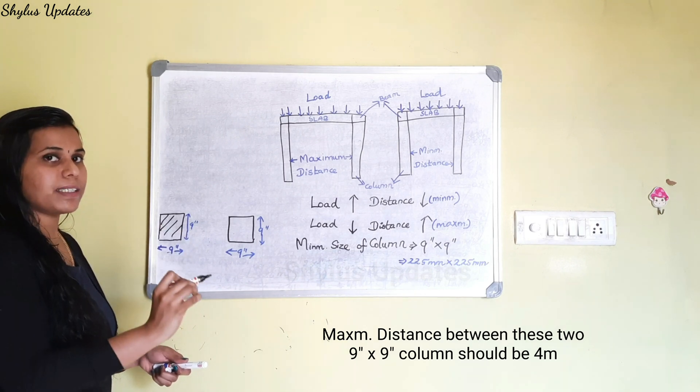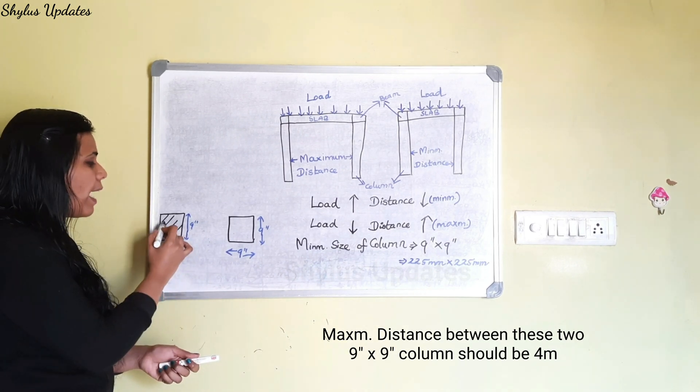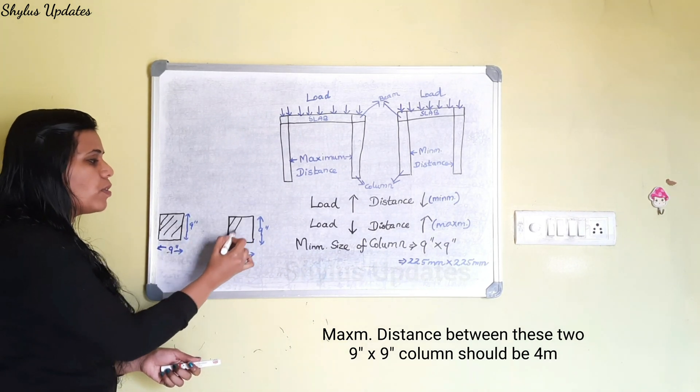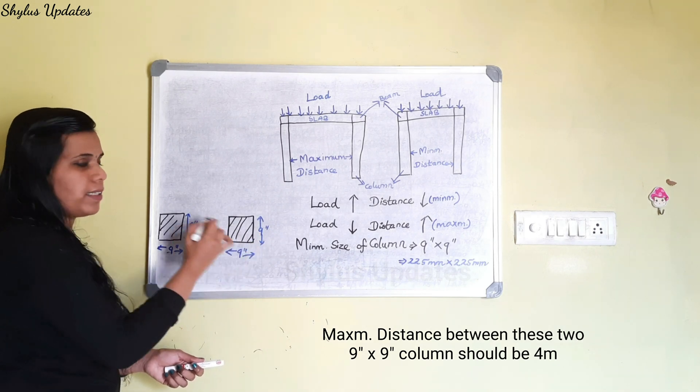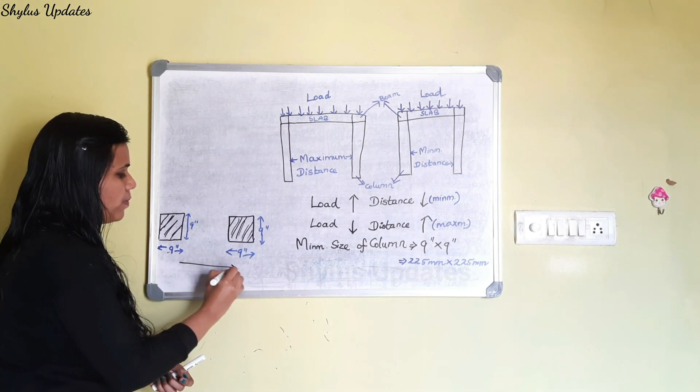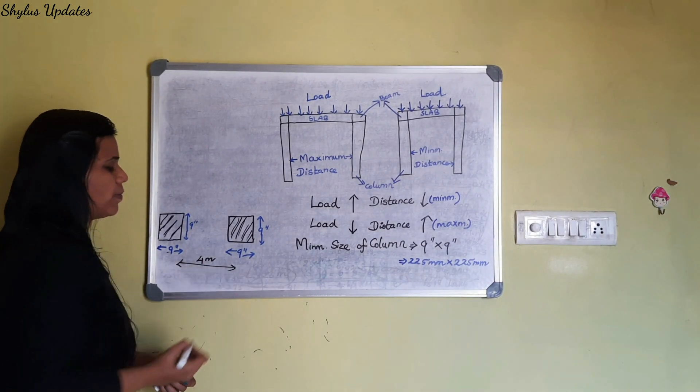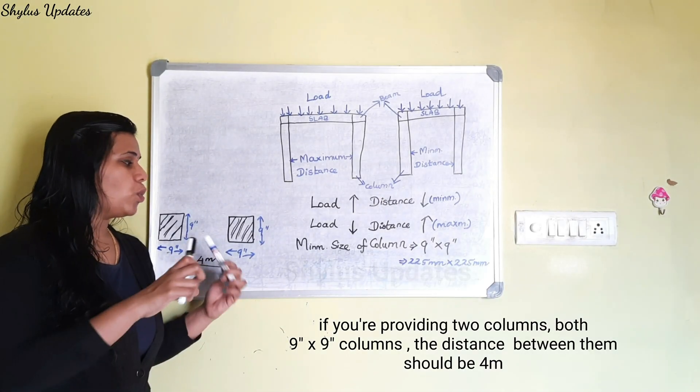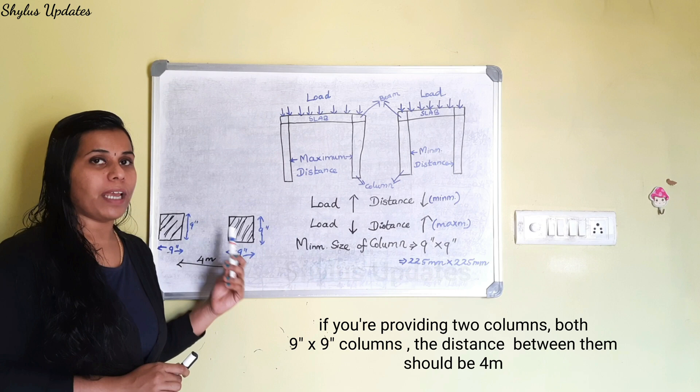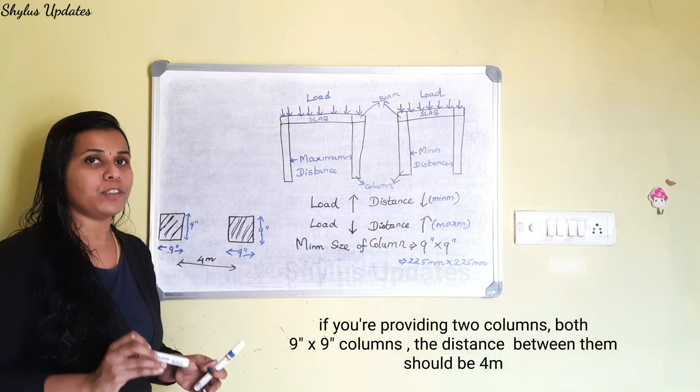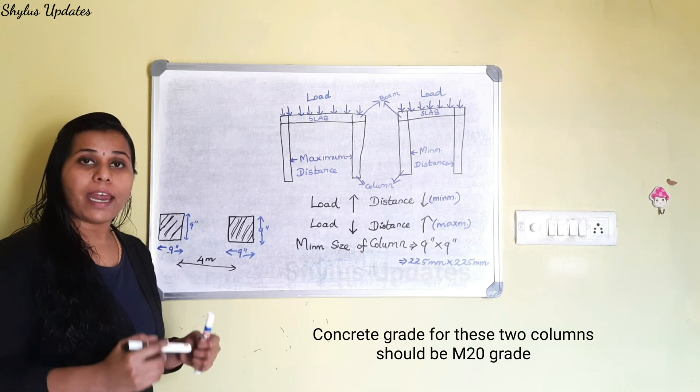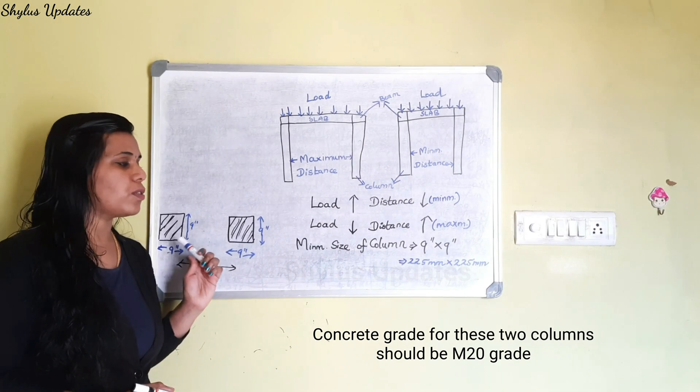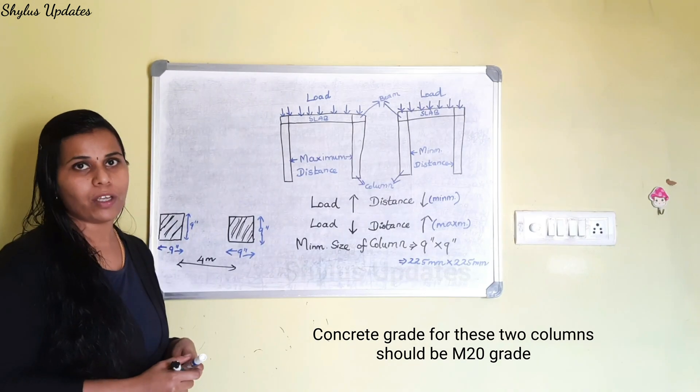For minimum size of column, the maximum distance between these two 9 inch into 9 inch columns should be 4 meter. If you are providing two columns, both 9 inch into 9 inch size, the distance between two columns should be 4 meter. And also, the concrete grade for these two columns should be M20 grade concrete.